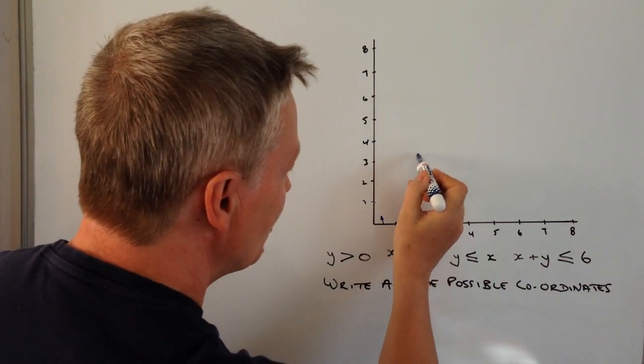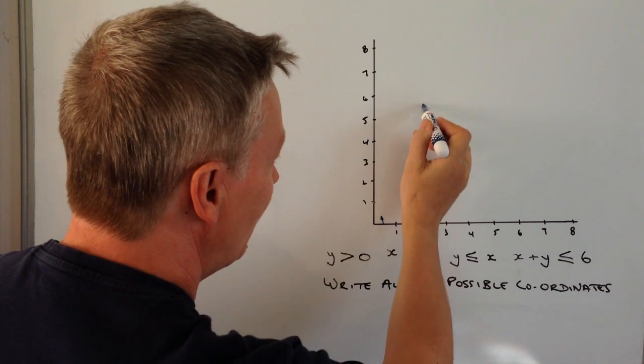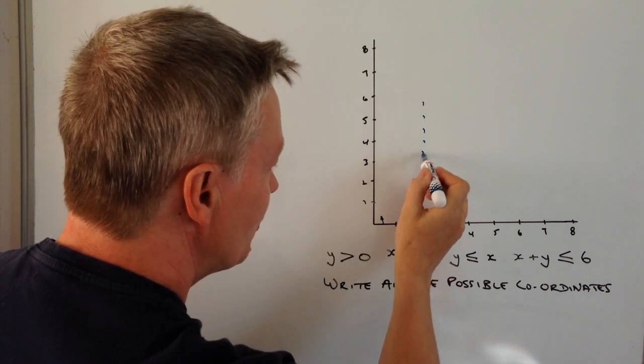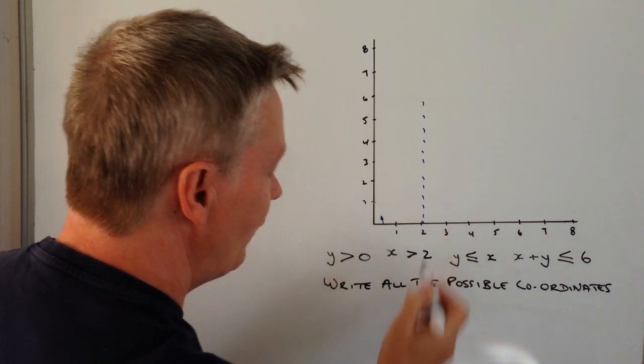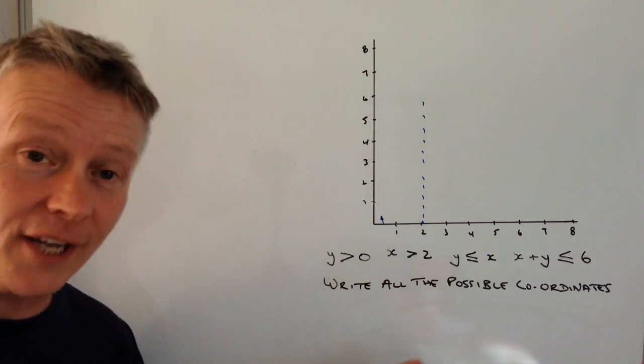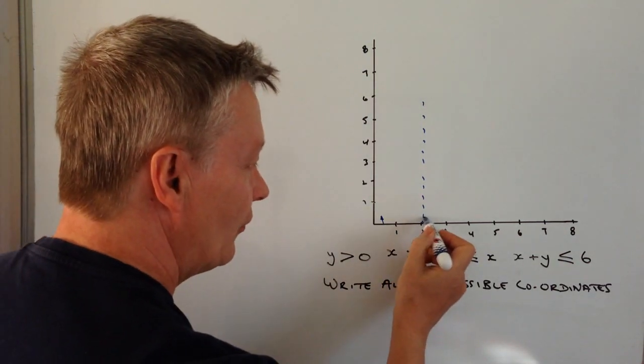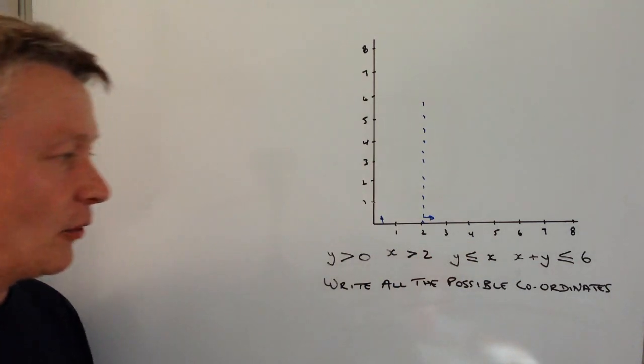So let's just draw a little dash line and we'll do something like that. So all the values of x are going to be greater than two, so they're going to be on the right hand side.